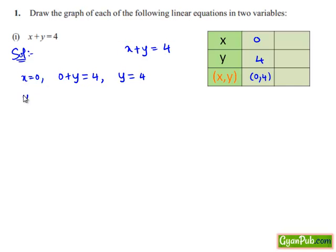Now let us put y equals 0 in the given equation. Then we get x plus 0 equals 4, that is x equals 4. Hence when y equals 0, x equals 4. So the ordered pair (4, 0) is another solution of the given equation.